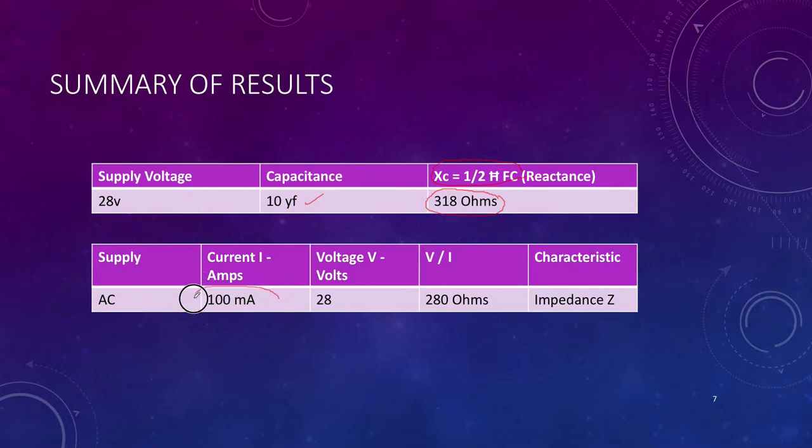If I take my AC values, I know that I was pulling 100 milliamps and 28 volts in my circuit. And I take the voltage and divide it by the current, that's 28 volts divided by 100 milliamps, I get 280 ohms.